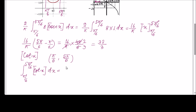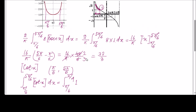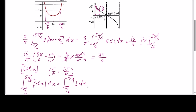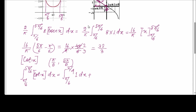Breaking the integral for [cot x]: from π/6 to π/4, cot x ranges from √3 down to 1, so [cot x] = 1. From π/4 to π/2, cot x goes from 1 down to 0, so [cot x] = 0. From π/2 to 3π/4, cot x goes from 0 down to −1, so [cot x] = −1.